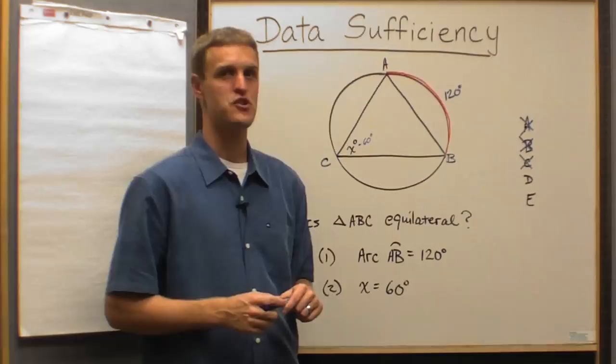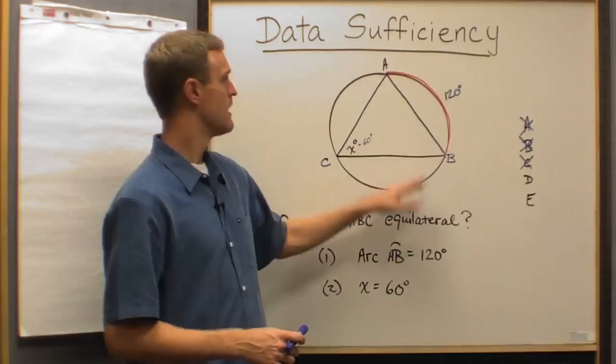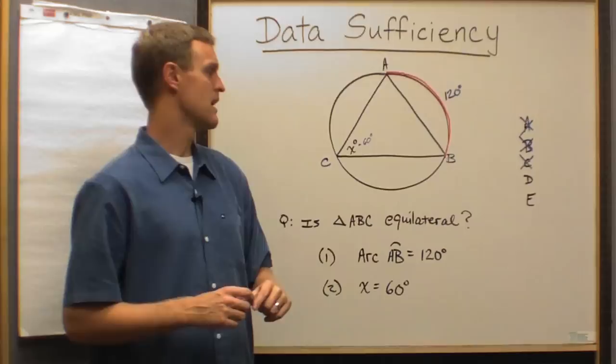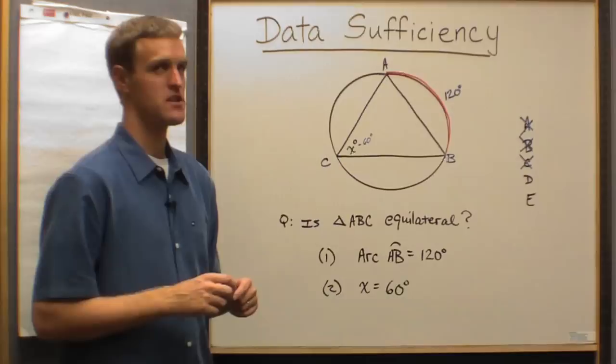Which brings us to the question, do we have enough information? Let's look at just statement one, individually. Statement one, in isolation. Is knowing that that's 120 degrees going to be sufficient or not to answer the question, is A, B, C equilateral?